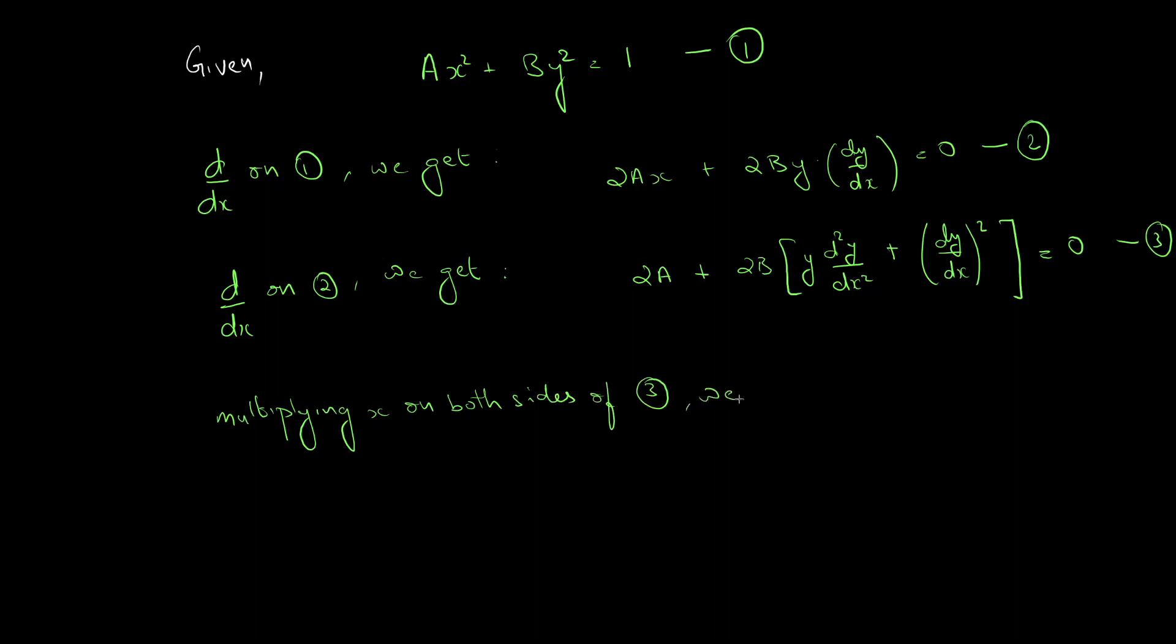We get 2Ax + 2Bx into y d²y/dx² plus dy/dx the whole square equal to 0. So, let this be equation 4.